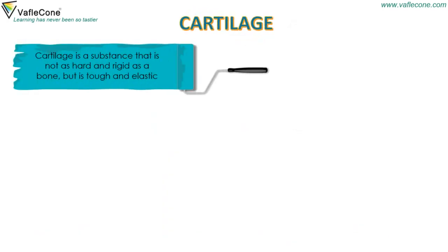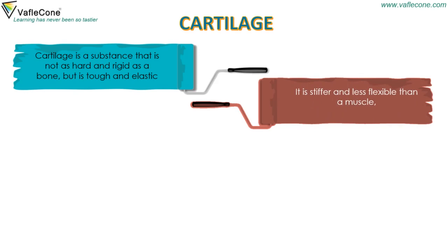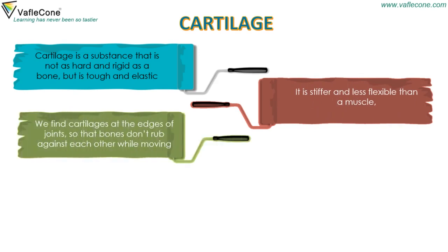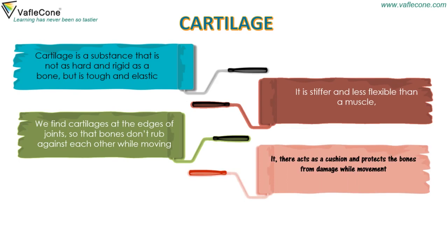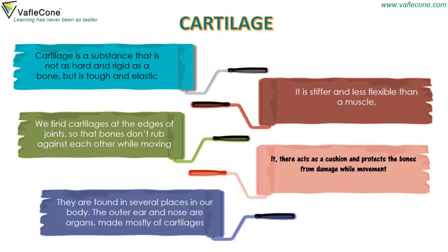Cartilage. Cartilage is a substance that is not as hard and rigid as bone but is tough and elastic. It is stiffer and less flexible than a muscle. We find cartilage at the edges of joints so that bones do not rub against each other while moving. It acts as a cushion and protects the bones from damage during movement. They are found in several places in our body — the outer ear and nose are organs made mostly of cartilage.